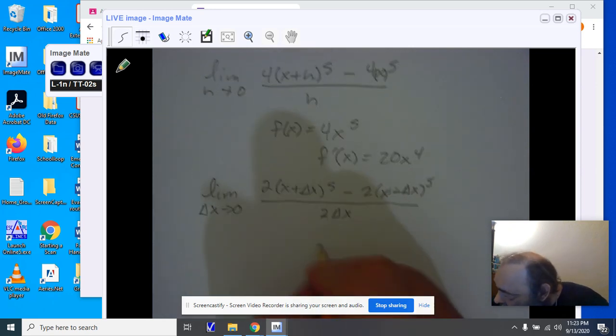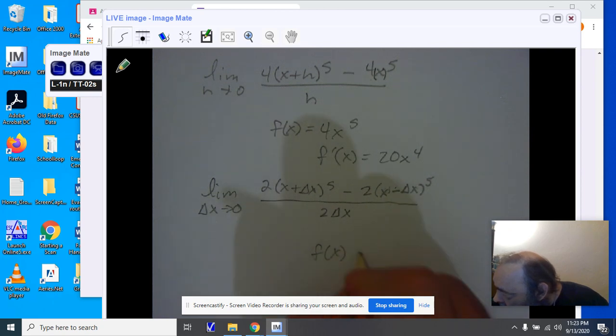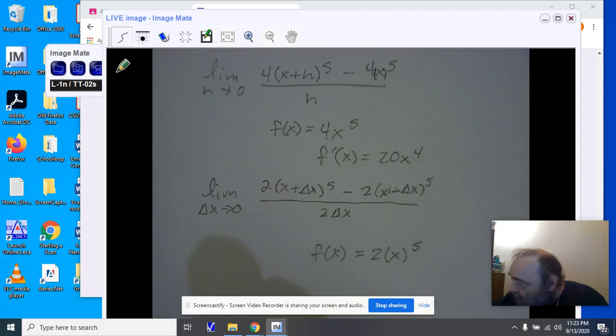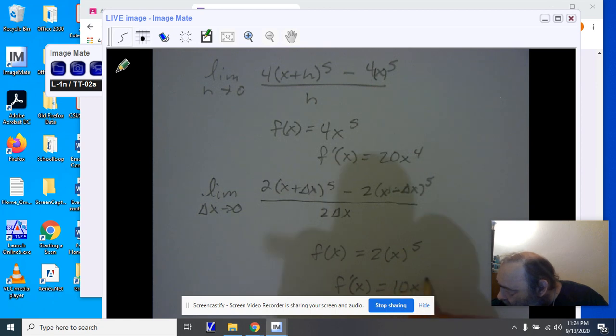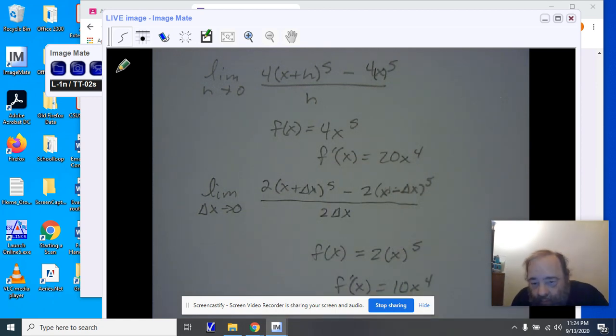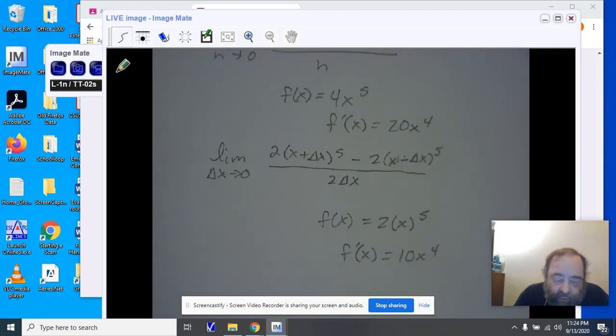Our function, f(x), is 2x to the fifth, and we are going to therefore have our derivative, 10x to the fourth. But we have no value to check.